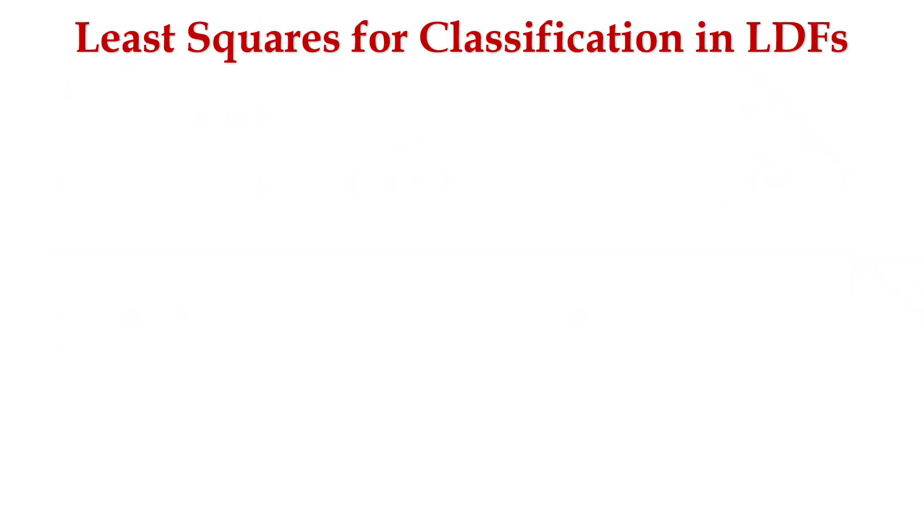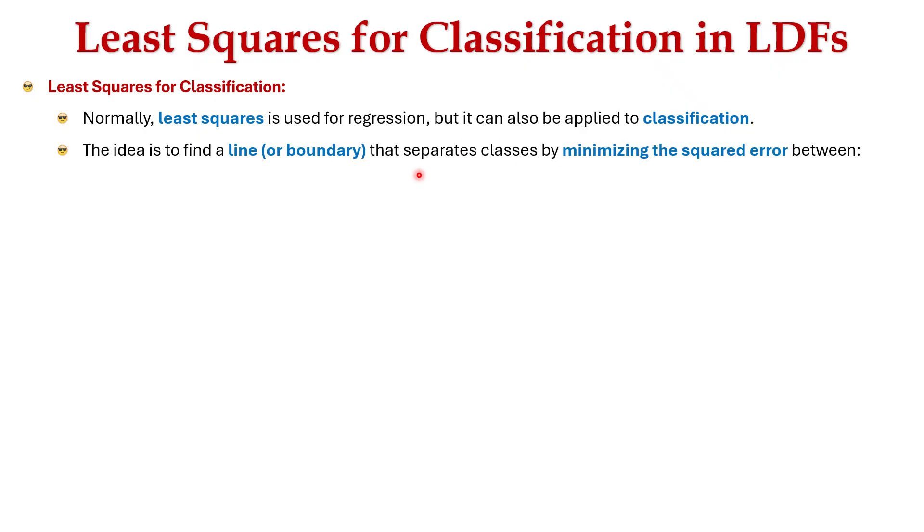Finally, let's learn about least squares for classification in linear discriminant functions. Normally least squares is used for regression, but it can also be applied to classification. The idea is to find a boundary that separates classes by minimizing the squared error between the predicted outputs and the actual class labels. As a result, we obtain a linear discriminant function.